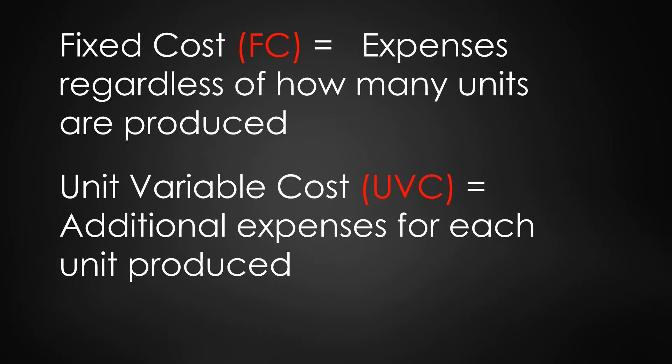Variable costs vary according to how many units are produced. This can include materials to make the product, direct labor costs, and other resources needed for each item produced.